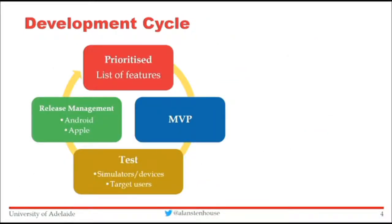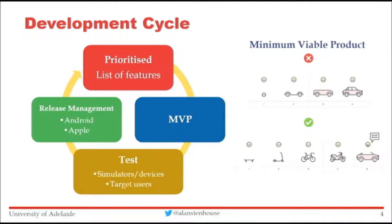Development cycle: start off and prioritise your list of features, because you're going to cut it down. Start with the most important things — go for a minimum viable product. Start with something really useful, the most essential features, and then build and add on things as time and budget permit. Prototype these, get them out, try them out, and iterate. Test on your simulators first, then on target devices, because they are different. And if you can, test with target users, because they'll always come up with something you haven't thought of.